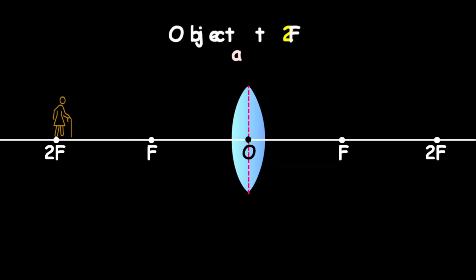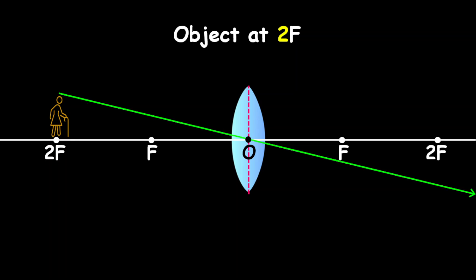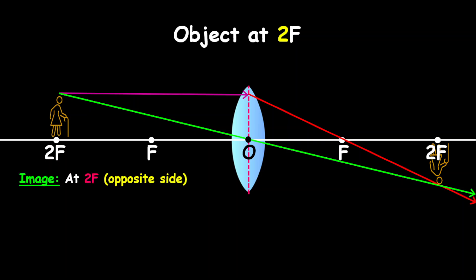Now let's look at the object at 2F. Our unrefracted ray, our parallel ray, our refracted ray — notice where they meet. They meet at 2F. So the image is at 2F, definitely on the opposite side of the lens compared to the object, inverted, and definitely real. Because the image and the object are at equal distances from the lens, they are the same size.